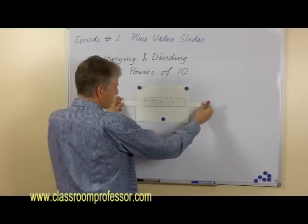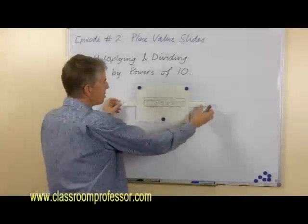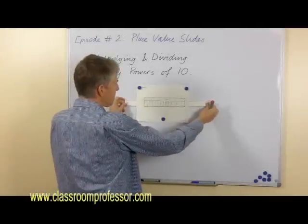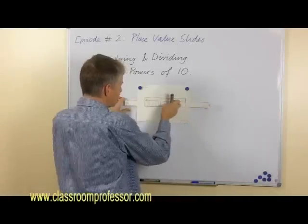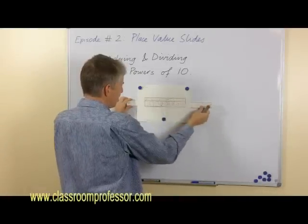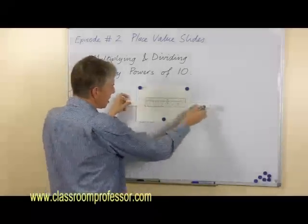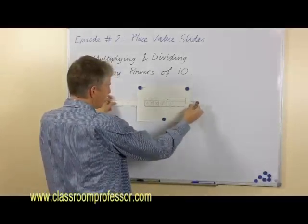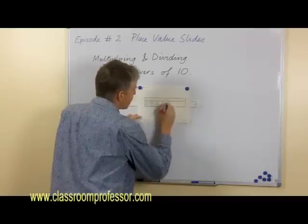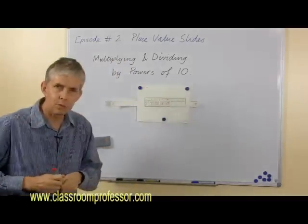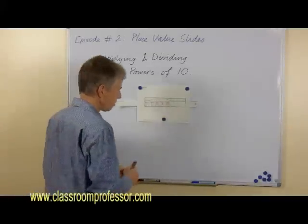Moving it back to where it started: if we wanted to divide by 10, we just slide it in the other direction, and we get 27.35. If we take this two steps, we're going to run out of digits, so we might need to put a zero in. That's what we would get if we multiplied by 10 — 127,350.